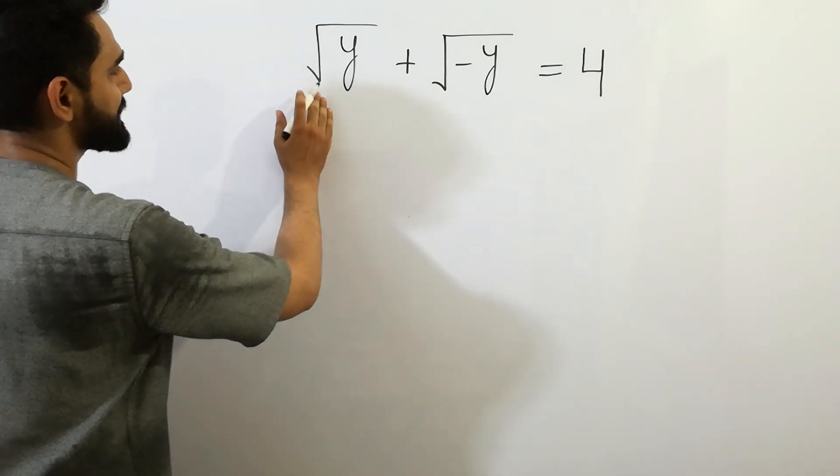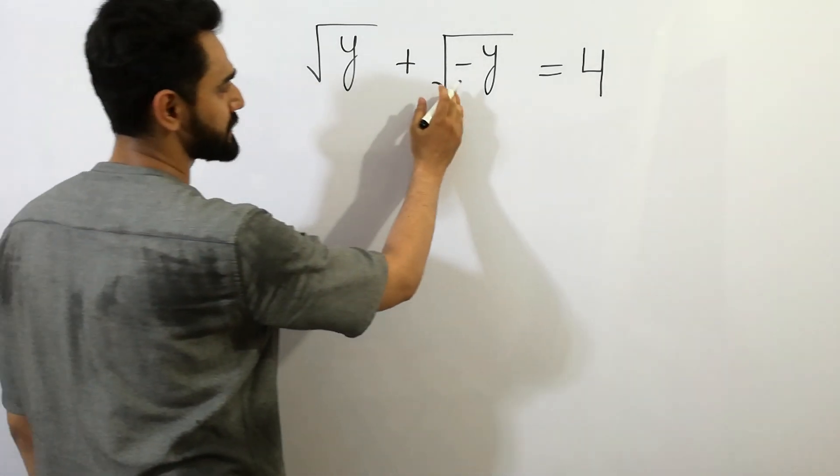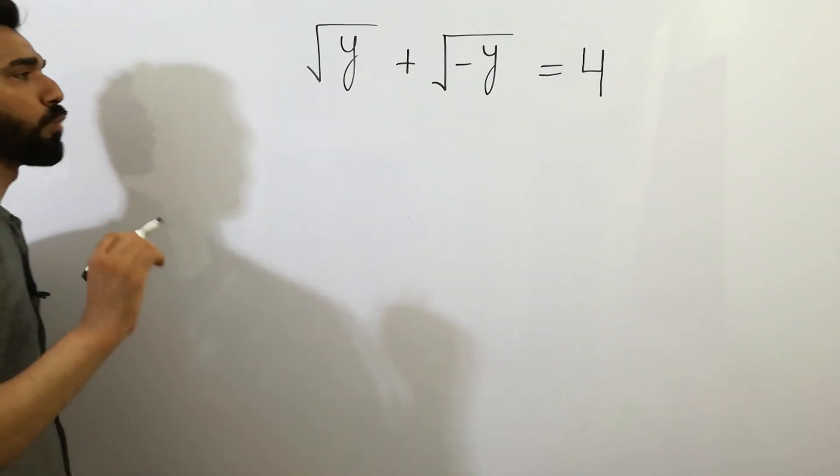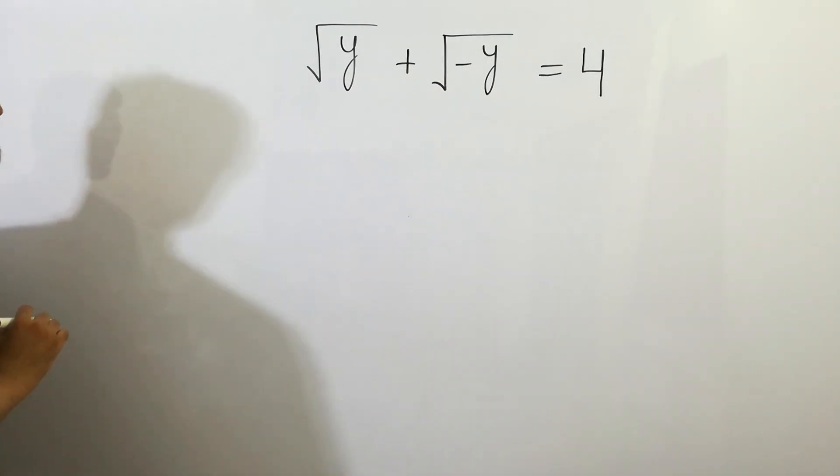Hey guys, square root of y plus square root of minus y equals 4, then y is equal to, let's solve it.